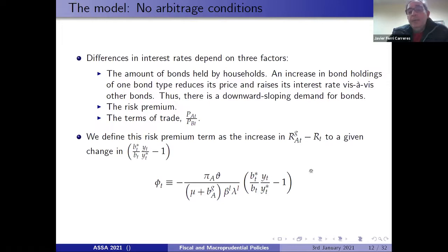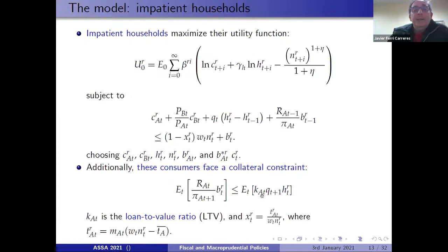The risk premium takes into account how this index affects the difference in interest rates between Spanish and German government bonds. As regards impatient households, there is a collateral constraint: the ability of borrowers to issue private bonds depends on their capacity to extract collateral from the value of houses, which in turn depends on the loan-to-value ratio. This loan-to-value ratio is one of the instruments used by the macroprudential authority.